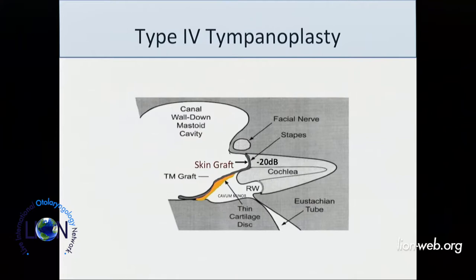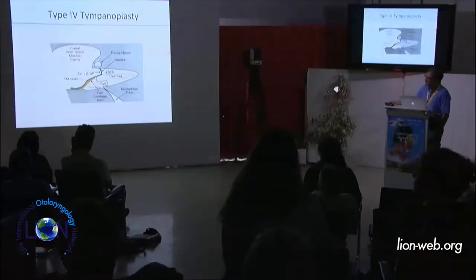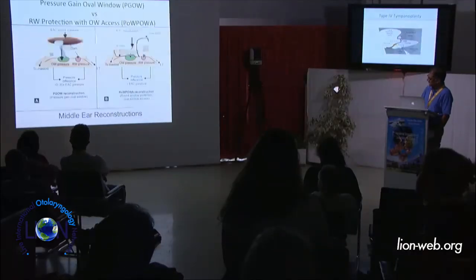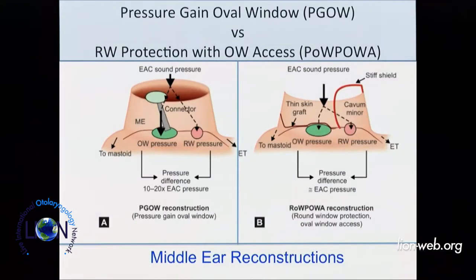A type 4 tympanoplasty involves shielding the round window and directing the ear canal sound pressure to the oval window. You can get to within 20 dB because the middle ear really gives about 20 dB gain only — if you could do it perfectly. There are really two kinds of middle ear reconstructions: oval window pressure gain, which is what most ossiculoplasties aim for, and type 4s and type 5s where you just shield the round window and let the external ear canal pressure drive the system.